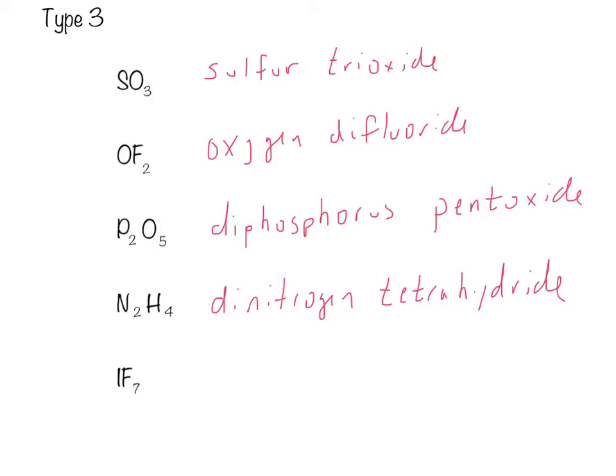And then finally, IF7. We name the iodine. So, iodine. And then we've got seven fluorines. So, that is a heptafluoride. Iodine heptafluoride.